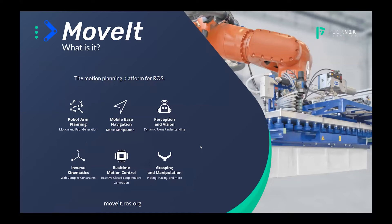So what is MoveIt? I'm sure everyone on this call knows, but just in case there are some newcomers to the consortium: this is one of the original motion planning platforms in ROS. It excels at controlling robot arms going from point A to point B around obstacles with collision checking and inverse kinematics. We have a lot of extensions for perception, mobile manipulation, Cartesian control, and we have some libraries on how to do grasping manipulation.